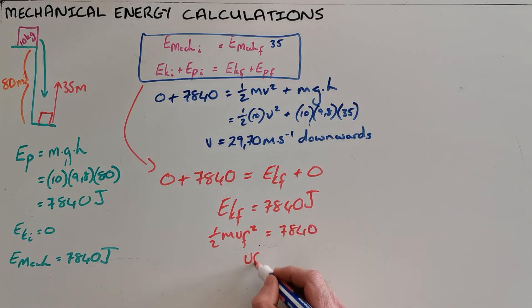Using the formula for kinetic energy we can solve for the unknown velocity at that point to find that our velocity must be 39.60 meters per second downward.